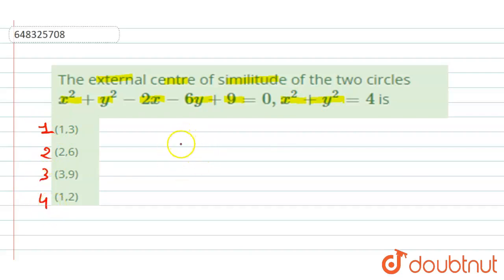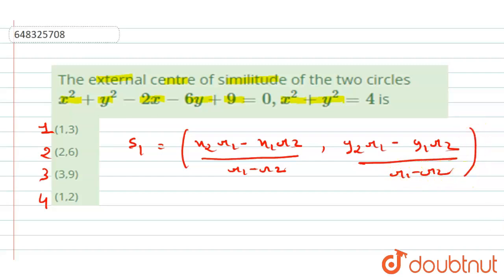So firstly, we will write the formula for the external similitude. S₁ equals: the formula is (x₂r₁ - x₁r₂)/(r₁ - r₂), and for y it is (y₂r₁ - y₁r₂)/(r₁ - r₂). So firstly we will find x, y, and all these values.